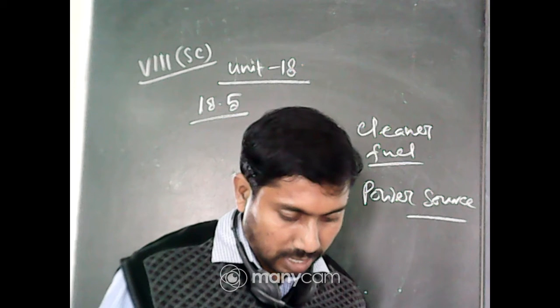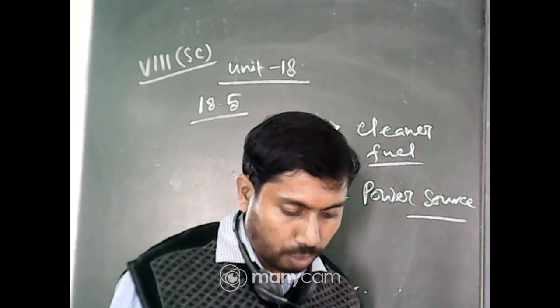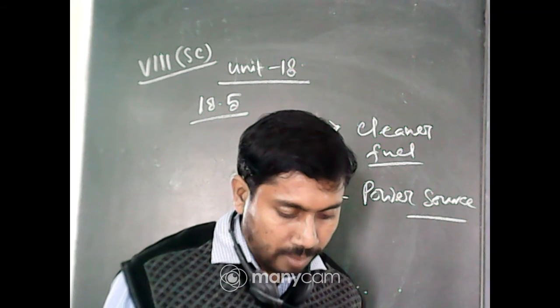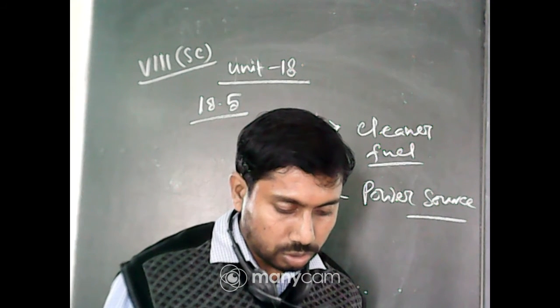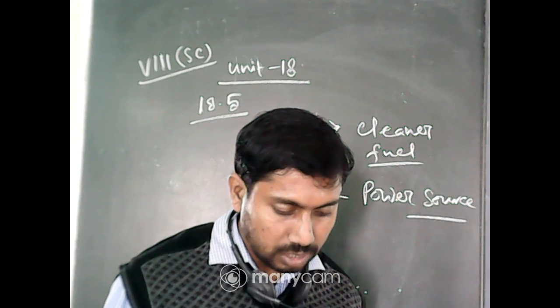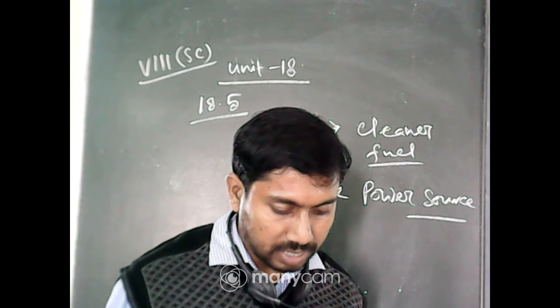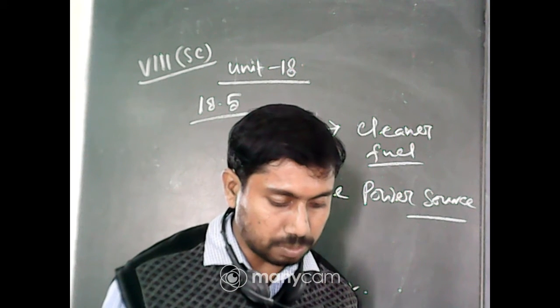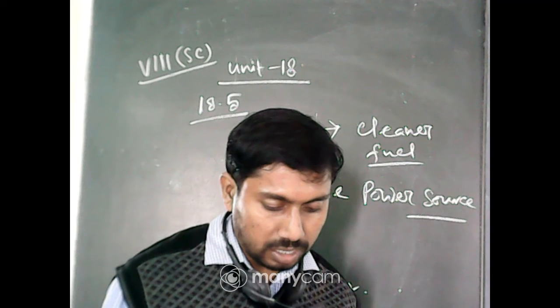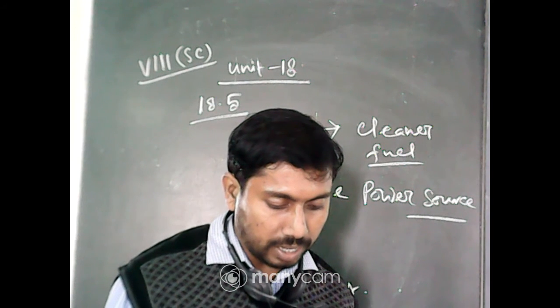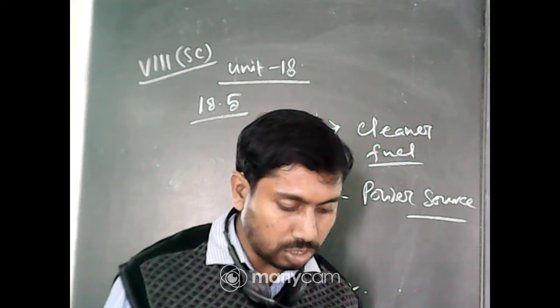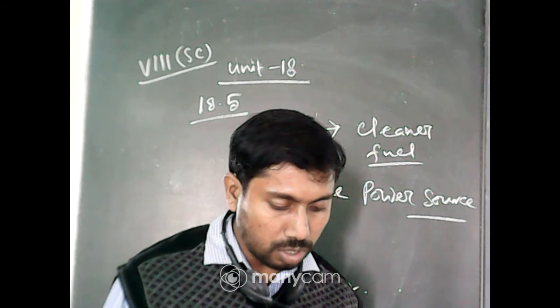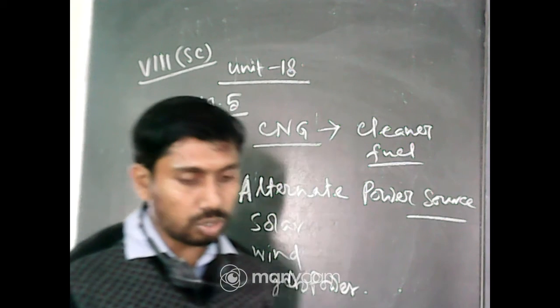Okay, next one is activity 18.4. You have various options of commuting to your school such as walking, going by bicycle, traveling by bus or other public transport, using a car individually, traveling by a car pool. Discuss in your class the impact of each of these options on the quality of air.